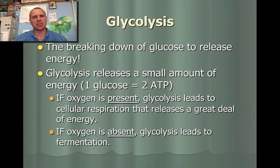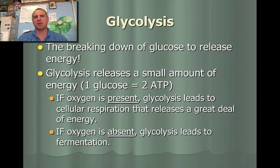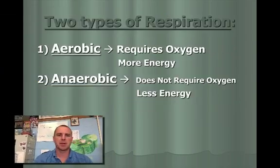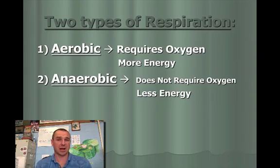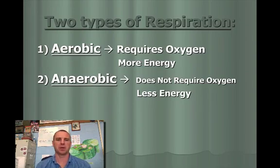If you have oxygen present, it's going to go through a certain pathway called aerobic cellular respiration. And if you have no oxygen present, it's going to go through another pathway called anaerobic respiration, which we call fermentation. So there are actually two types of respiration: one with oxygen present, and one without oxygen present.